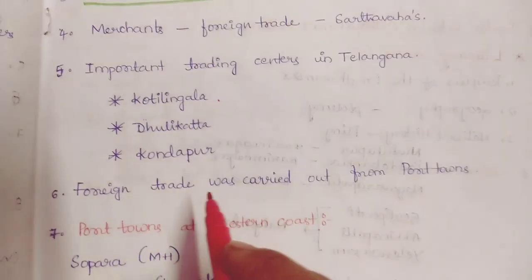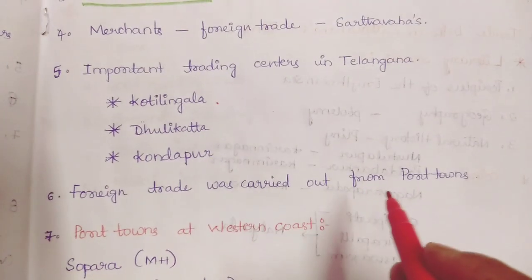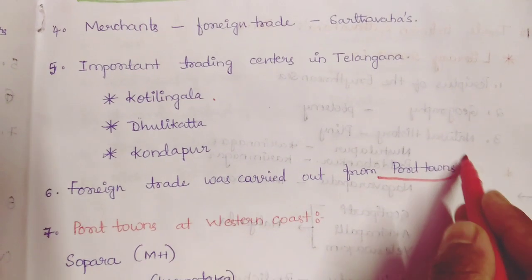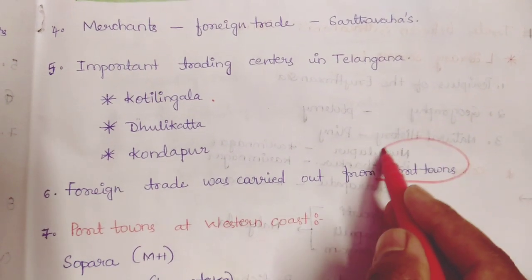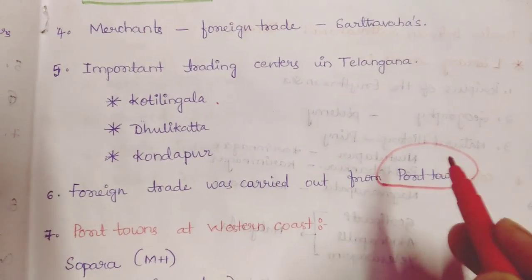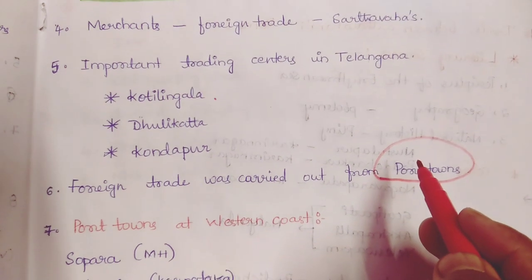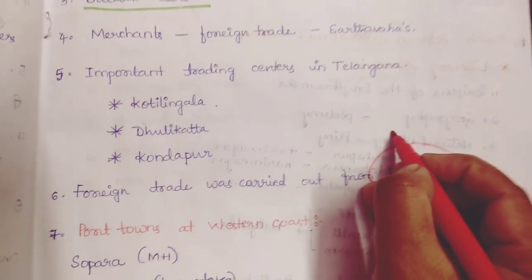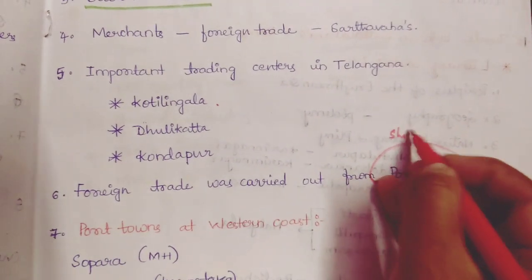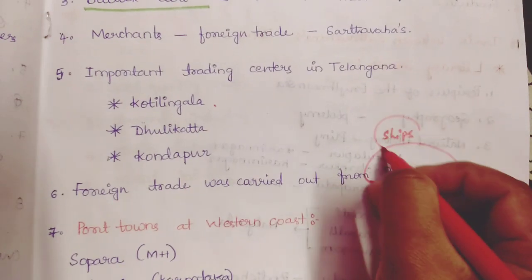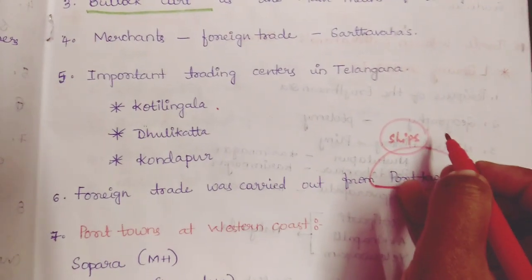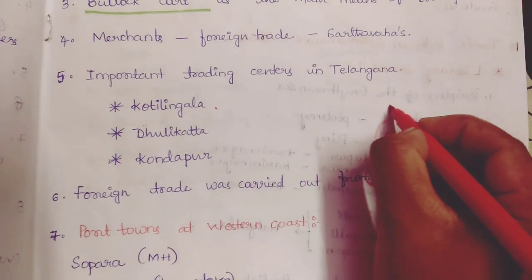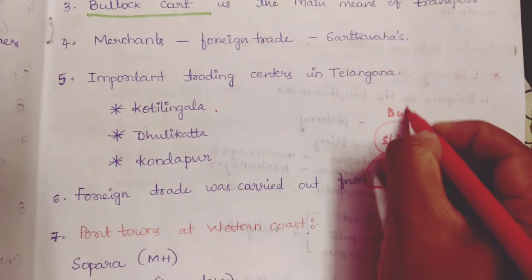Foreign trade was carried out from port towns. They used ships for foreign trade. For internal trade, they used Bullakat.